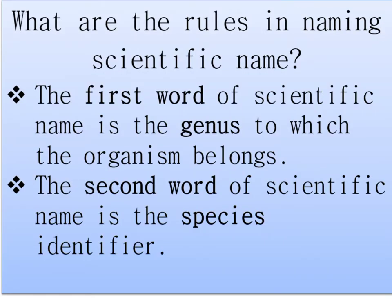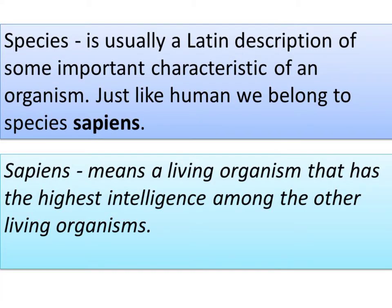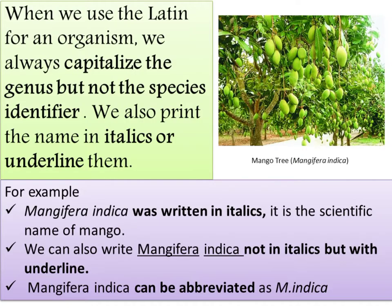What are the rules for writing a scientific name? The first word is the genus to which the organism belongs, and the second word is the species identifier, usually a Latin description of some important characteristic. For example, sapiens means a living organism with the highest intelligence among other living organisms. When writing the Latin name, we always capitalize the genus but not the species identifier, and we print the name in italics or underline it.